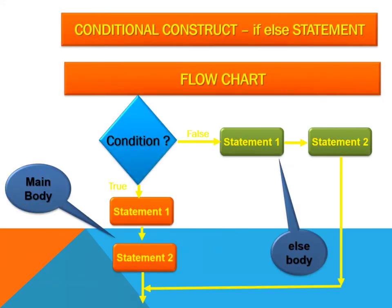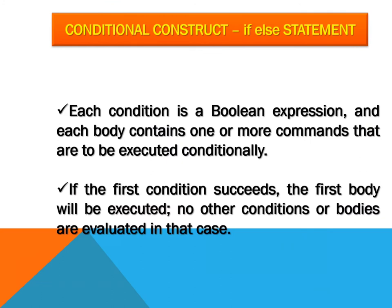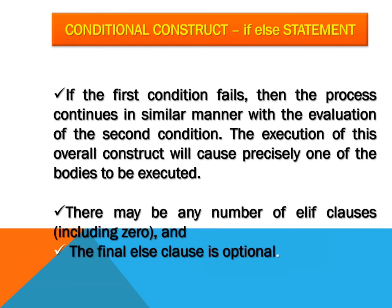The if-else conditional construct flowchart shows: if the condition is false, statement one (else body) executes; if the condition is true, statement two (main body) executes. Each condition has a boolean expression and each body contains one or more commands to be executed conditionally. If the first condition succeeds, the first body is executed and no other conditions or bodies are evaluated. If the first condition fails, the process continues evaluating the second condition. The overall construct will cause precisely one body to be executed. There may be any number of else-if clauses.